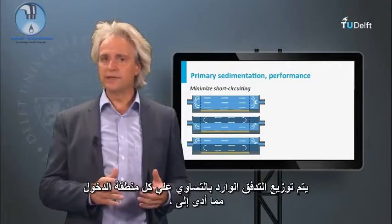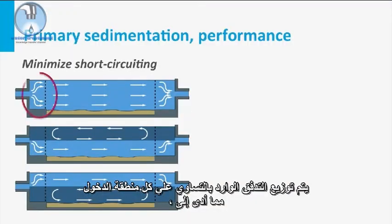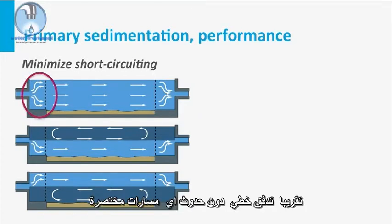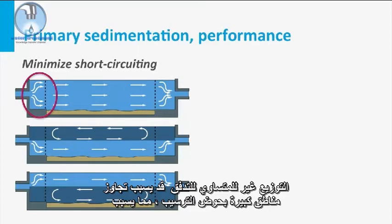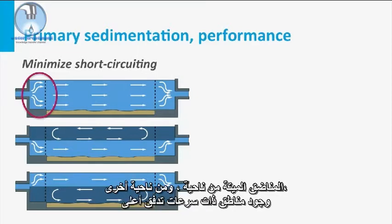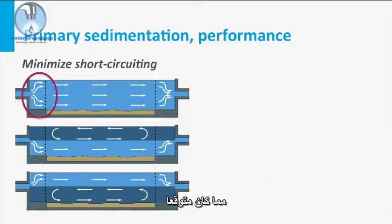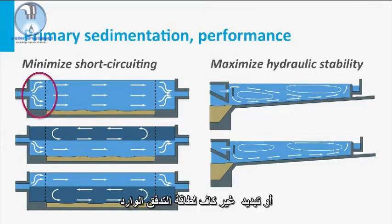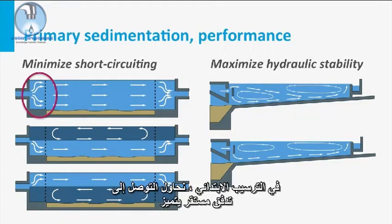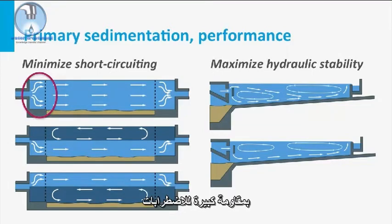Most ideally, the influent is distributed equally over the entire inlet area, resulting in a more or less laminar flow without any areas of hydraulic short-circuiting. Inadequate flow distribution may bypass large areas of the clarifier, resulting on the one hand in dead spaces, and on the other hand in areas with much higher flow velocities than foreseen. Also, circular tanks may develop unstable flow regimes as a result of inadequate flow distribution or improper energy dissipation of the incoming flow. In a primary clarifier, we try to reach a stable flow regime characterized by a high resistance to flow disturbances.